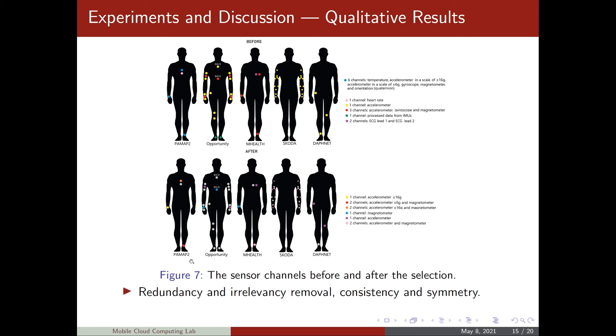As for relevance removal, we notice that for the PAMAP2 dataset, the heart rate sensor was removed. In this dataset, we have activities such as running, jogging, jumping, cycling, standing stair, descending stair, rope jumping, which are all activities that have approximately the same heart rate. So for this dataset, it's reasonable to say that the heart rate sensor is an irrelevant sensor channel. This is also the same case for the mHealth dataset, which have very similar activities, and both heart rate sensors were removed after the selection. In these cases of redundancy and irrelevance removal, we can see consistency of results between datasets.